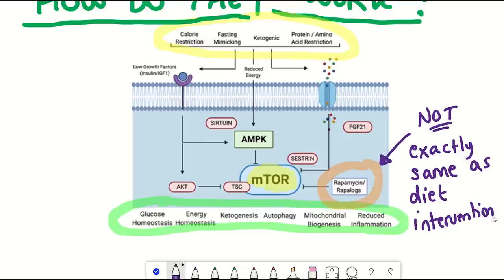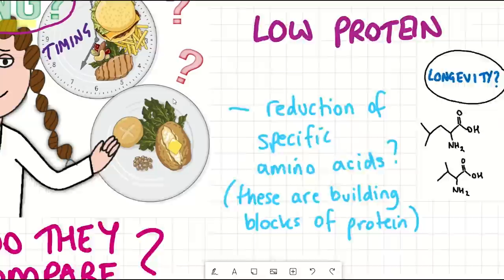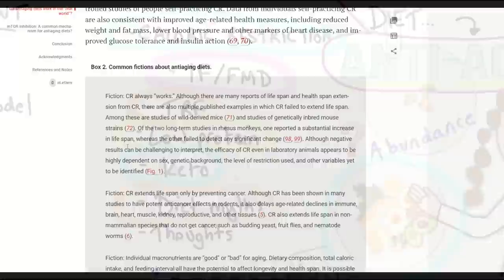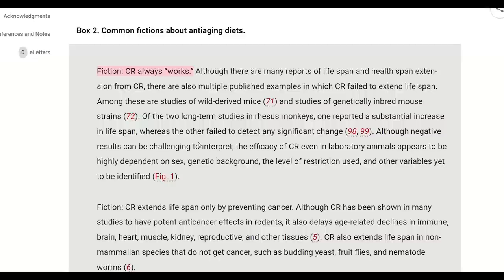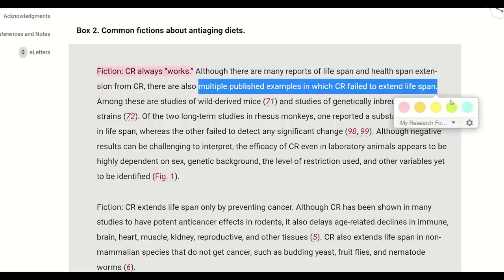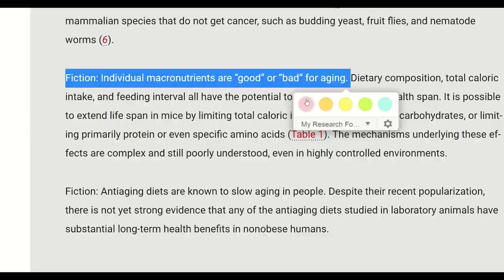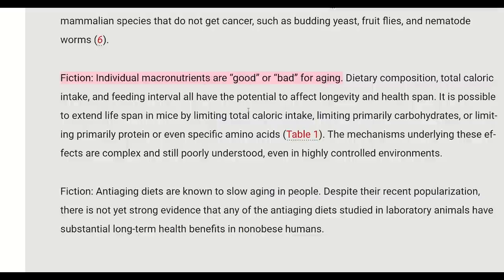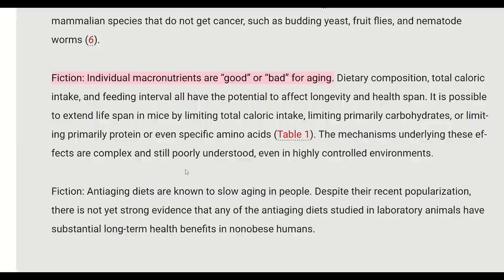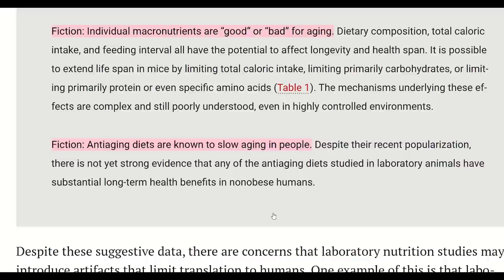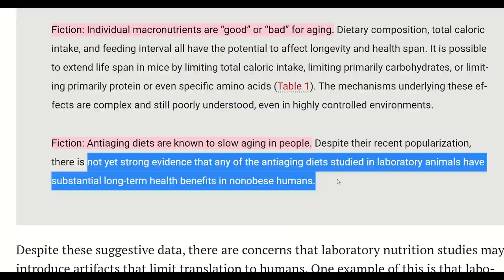Now, before you hear my verdict and future work ideas, I thought it'd be good to include some of the fact from fiction that's also included in this review. Firstly, that caloric restriction always works. This isn't quite the case, and although we don't necessarily understand why they haven't always worked, it seems likely that it's dependent on sex, genetic background, level of restriction, and other unidentified variables. A second statement is individual macronutrients are good or bad for aging. Firstly, the evidence is still unclear regarding this, but more importantly, we still need protein, fats, and carbohydrates to live, so I don't think you should consider any of them alone being bad. And then lastly, anti-aging diets are known to slow aging in people. Well, no, there isn't any strong evidence to support this in humans at the moment, and not even in model organisms such as mice.